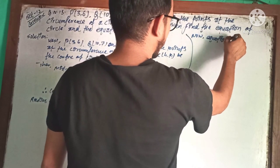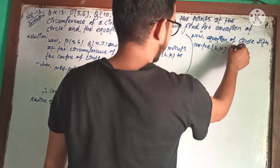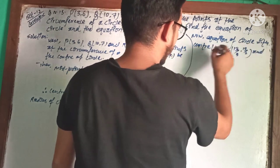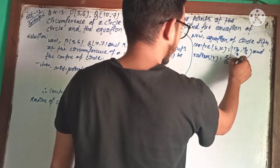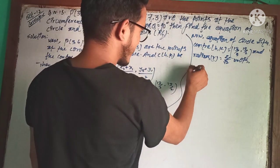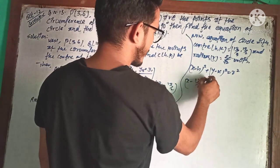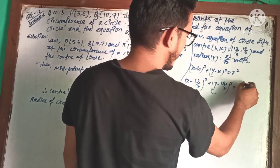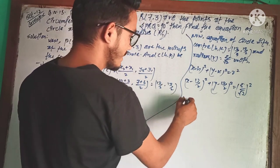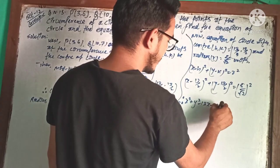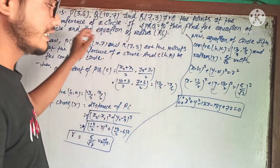The equation of circle with center (13/2, 13/2) and radius 5√2 is (x - 13/2)² + (y - 13/2)² = (5√2)². Solving gives x² + y² - 13x - 13y + 72 = 0. This is the required equation of the circle.